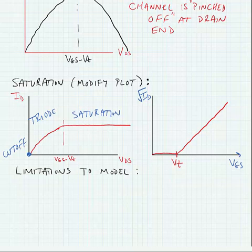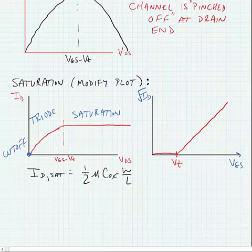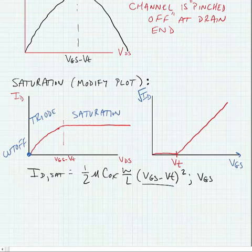Okay, so we'll make a slight modification to our current in saturation. The drain current in saturation is equal to one-half mu times C ox times W over L times VGS minus VT squared. And this comes from substituting VGS minus VT for VDS in the above equation. Now oftentimes we call this quantity VGS minus VT, the overdrive voltage.